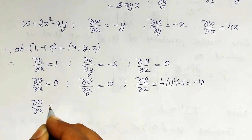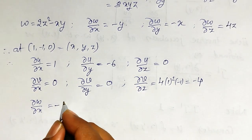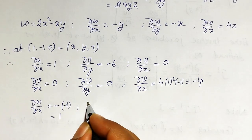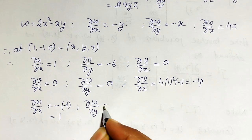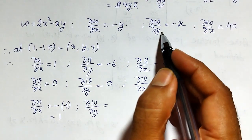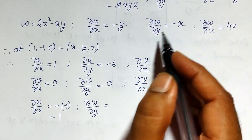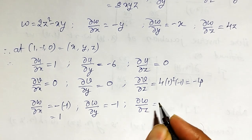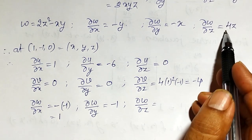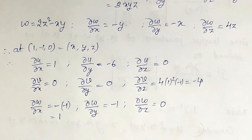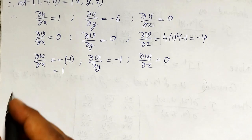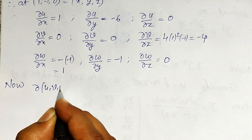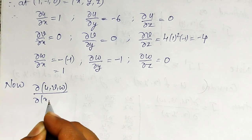For w at the point (1, -1, 0): ∂w/∂x = -y = -(-1) = +1. ∂w/∂y = -x = -(1) = -1. ∂w/∂z = 4z = 4(0) = 0. Now I will define and set up the Jacobian determinant.